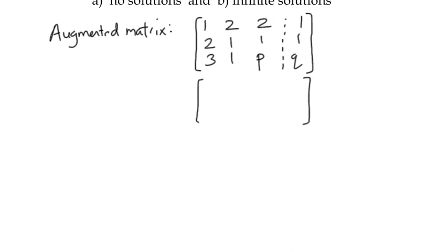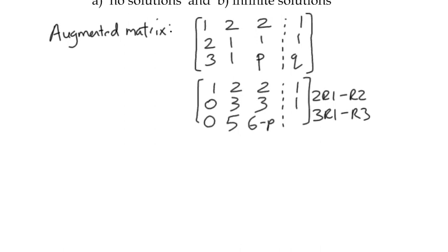I'll try and do that quickly. I'll do 1, 2, 2, 1. And I'm going to do 2 row 1 minus row 2. That'll give me 0 there. It's going to give me 4 subtract 1 is 3. 4 subtract 1 is 3. 2 subtract 1 is 1. And for the third row, I'm going to choose 3 row 1 minus row 3. 3, 1, take away 3 is 0. 6 subtract 1 is 5. 2 times 3 is 6. Subtract P is 6 minus P. And over in the constant matrix, 3, 1, are 3 minus Q is 3 minus Q.